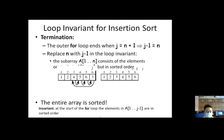The sub-array a[1..j-1] consists of elements in sorted order. After sorting, in our previous example, element 1 takes its correct position at position 1 because it is smaller than all elements 2, 4, 5, 6. Thus the entire array is sorted. The loop invariant at the start of the for loop: elements a[1..j-1] are sorted.